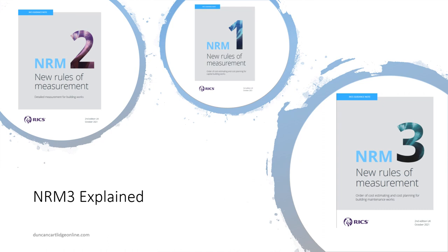NRM3 is part of a suite of documents that includes NRM1 and NRM2. NRM3 was the final part of the NRM suite to be published, in 2016. Other videos looking at NRM1 and NRM2 have been released, but NRM3 is suspected to be the least used volume of the NRM suite.